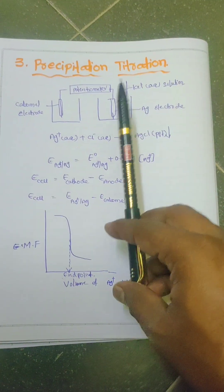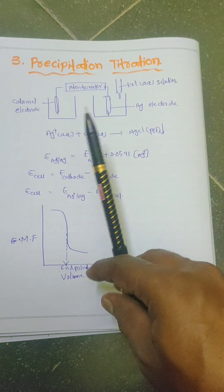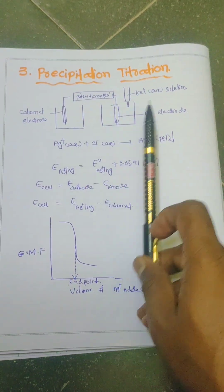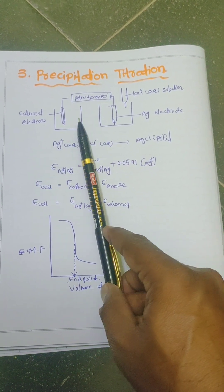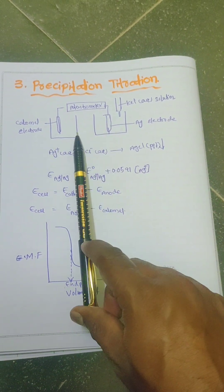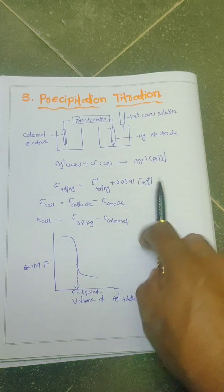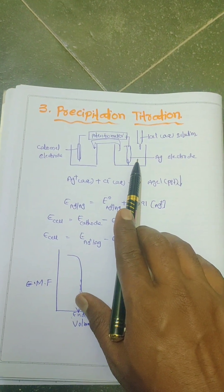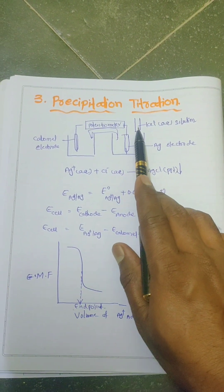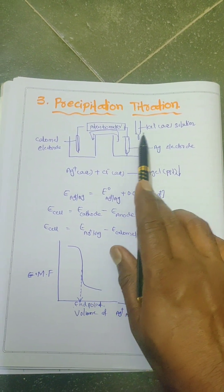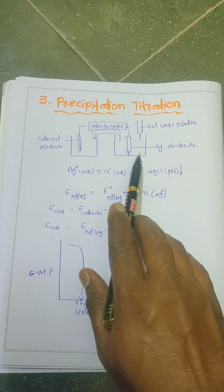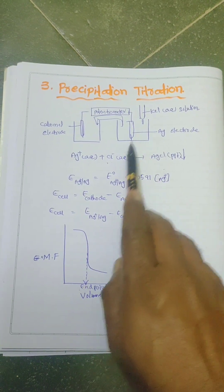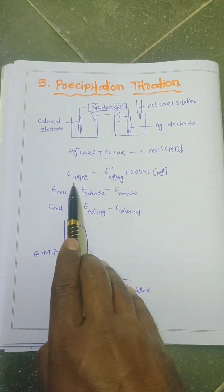Now we will discuss about precipitation titrations. Precipitation titrations are well explained by taking the reaction between silver ions and chloride ions. The calomel electrode is used as the standard electrode, connected to the silver electrode via a potentiometer and a salt bridge. Here, silver ions in the vessel react with KCl solution added from the burette. Chloride ions from KCl react with silver ions to form a silver chloride precipitate. The Nernst equation for the cell can be written accordingly.